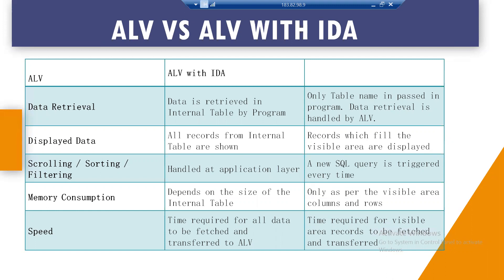Another difference is how data is displayed. In normal ALV, all records of the internal table are shown. However, with ALV IDA, only the records that fill the visible area are displayed. This is beneficial if your table has a huge number of records and you don't want to show all of them — you have control over how many records to display.